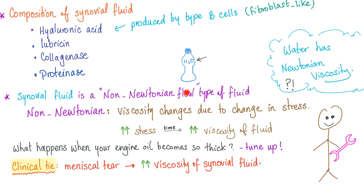On the other hand, non-Newtonian fluids such as your synovial fluid — their viscosity changes by changing the stress or the shear forces. Your synovial fluid is non-Newtonian. That's why we measure its viscosity on joint fluid analysis through arthrocentesis, because the viscosity of the synovial fluid changes by changing stress. And why is this fluid non-Newtonian? Because of the great hyaluronic acid. Therefore, if you have increased stress over time on your synovial fluid, you'll have increased viscosity of the fluid.